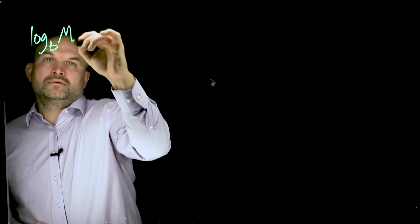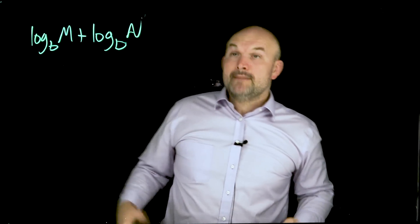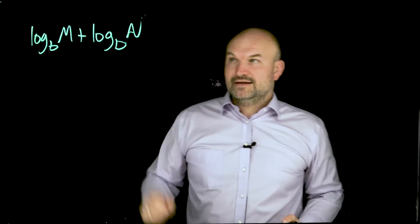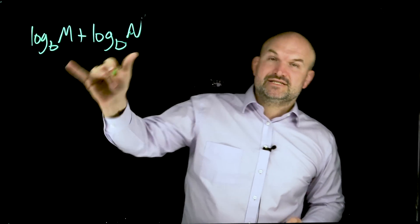So the first one would be the product property. It looks like this: I have log base B of M plus the log base B of N. These are two logarithms in an expression. Notice that the bases are the same.